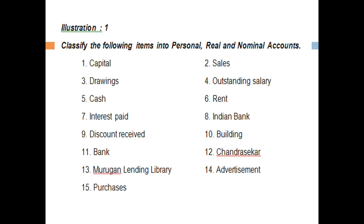Discount received is a nominal account. Building is a real account. Bank is a personal account. Chandrashekar is a personal account — a natural person.